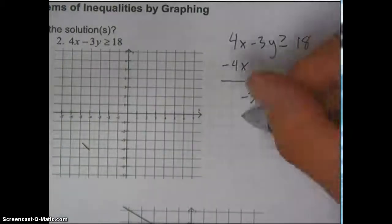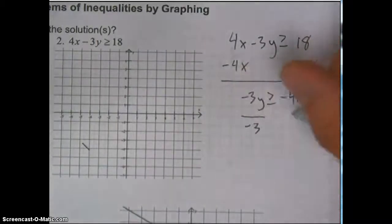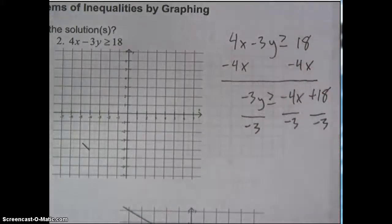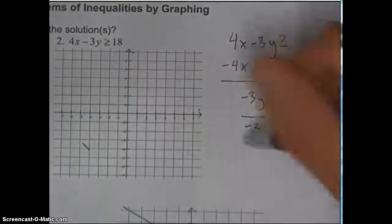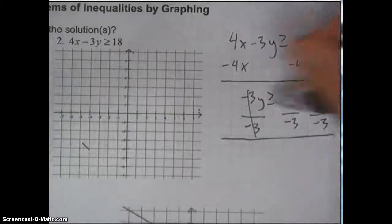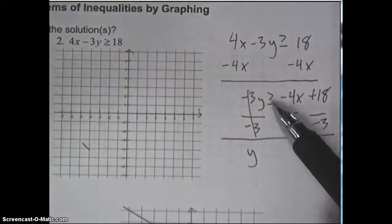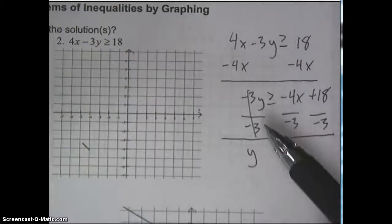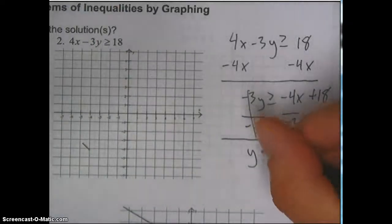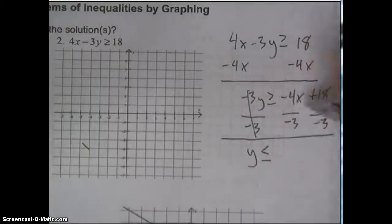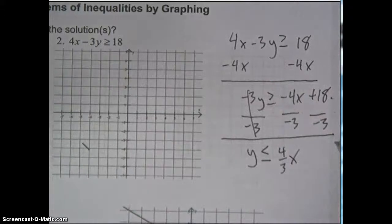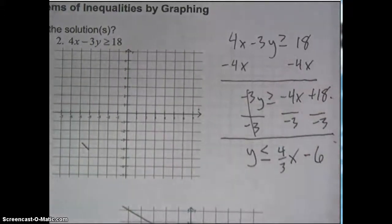The y is not by itself, so the last thing I need to do is divide everything by negative 3. These cancel out, I've got a y. But don't forget — when you multiply or divide by a negative, you've got to flip the inequality. So y is less than or equal to 4/3x minus 6. So I've got an inequality here that I can graph.